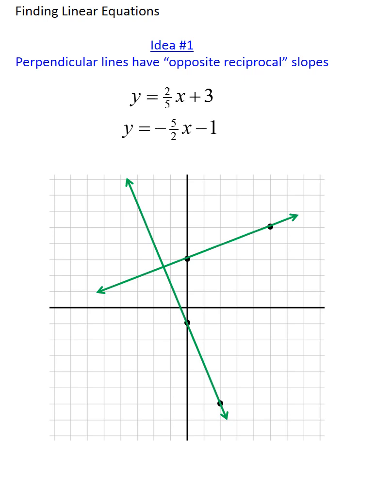Now notice that these two lines meet at what appears to be, and in fact is, a 90 degree or right angle. Hence, these two lines are what we call perpendicular. One of the things that makes them perpendicular is the fact that their slopes were opposite reciprocals.